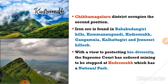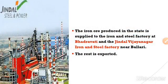Kudremukh has a variety of medicinal herbs, animals, and important trees. Mining works would harm those medicinal herbs, trees, and animals. That is why the central government has declared this place a national park and mining has completely stopped there. The remaining ore mines are still working. Iron ores of Karnataka are supplied to the iron and steel factory at Bhadravathi and Jindal Vijayanagar Iron Limited, Toranagal near Ballari. Remaining iron ores are exported to various parts of the nation and foreign countries.